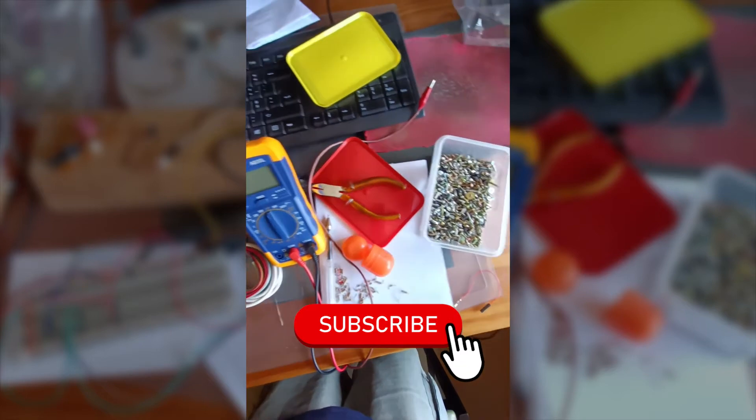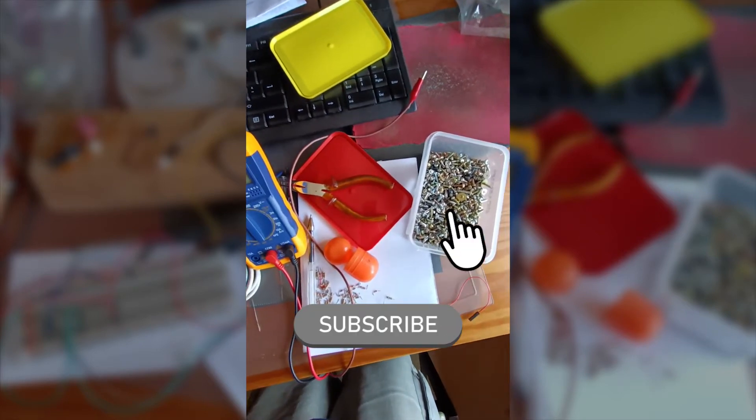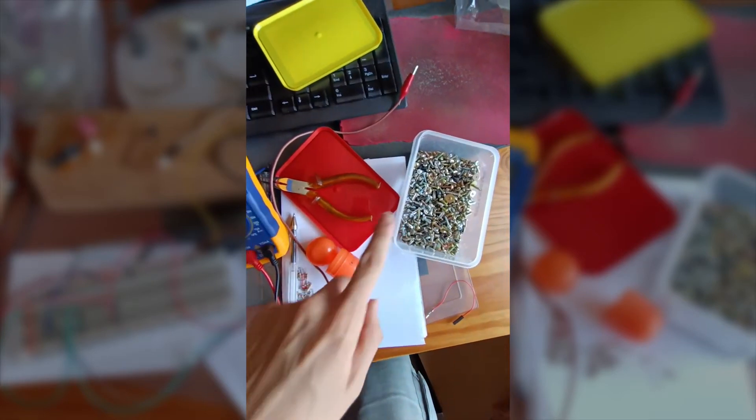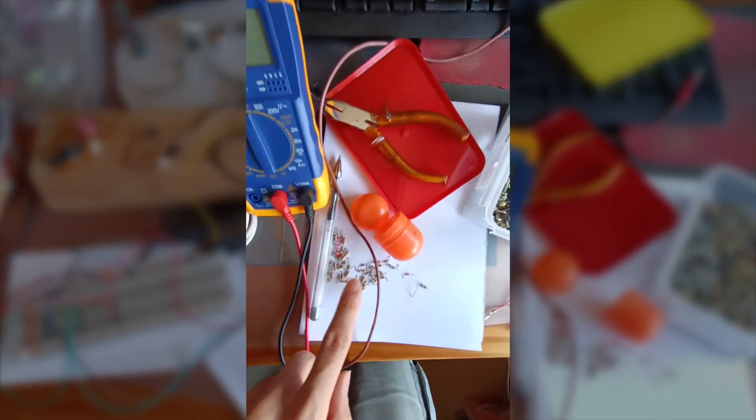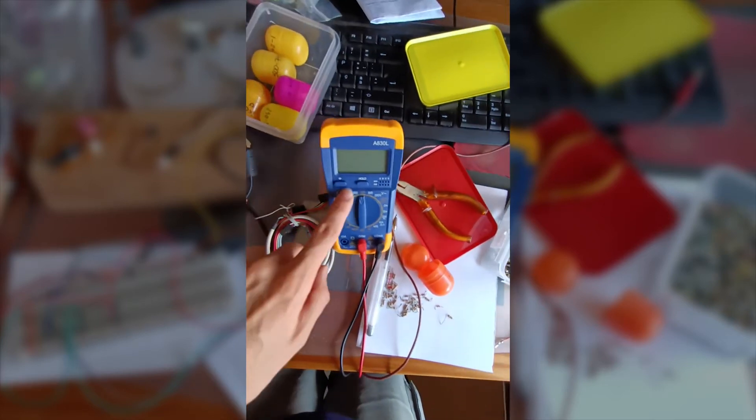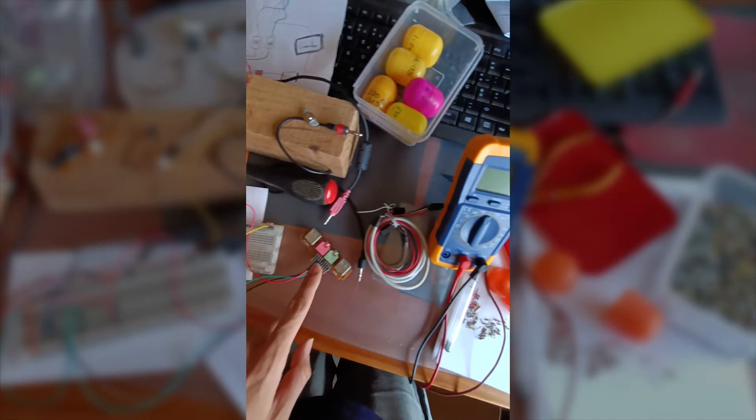During the prototype phase, things get very messy on the table. We have screws, tools, resistors that I will need, a multimeter, and cables.